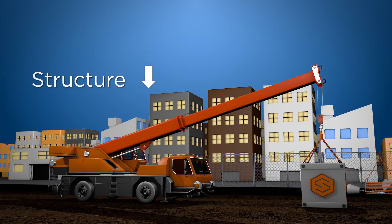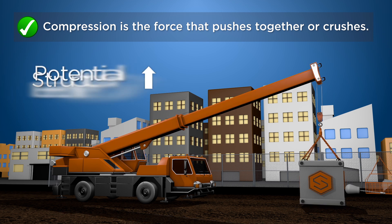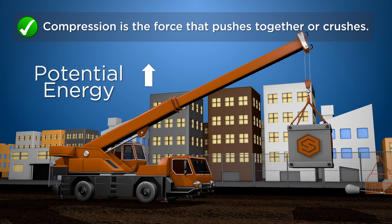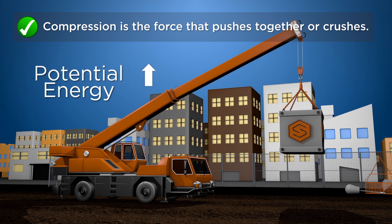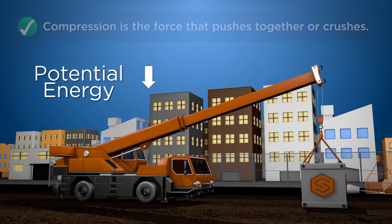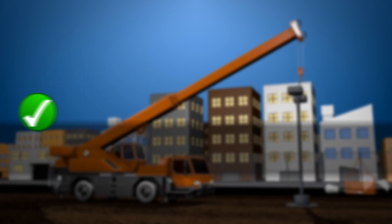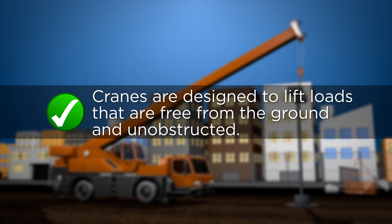A crane lifts a load by distributing the weight of the load along the structure. This redistribution of the weight is called a compression load. As the load is applied to the structure, the potential energy of the boom increases. As the crane lowers a load, the potential energy is slowly released as the load is landed.